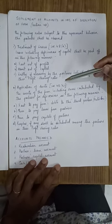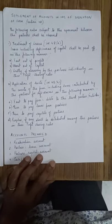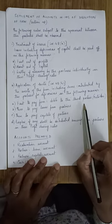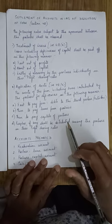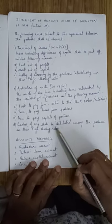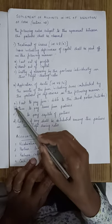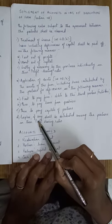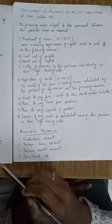Second, application of assets under Section 48(b): the assets of the firm, including sums contributed by partners for deficiencies, shall be applied as follows — first to pay the firm's debts to third parties; then to pay loans given by partners to the firm; then to pay the capitals of the partners; and finally, whatever surplus remains after these payments shall be distributed among the partners in their profit sharing ratio.